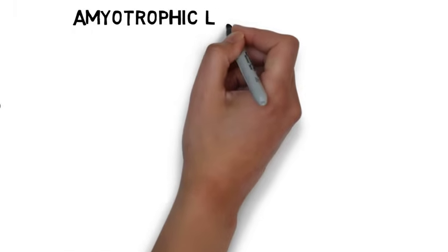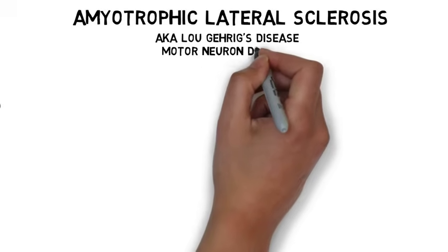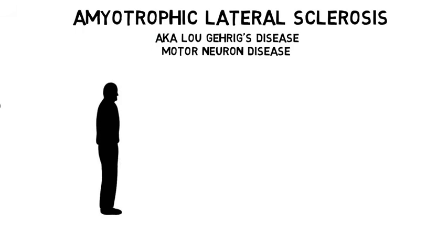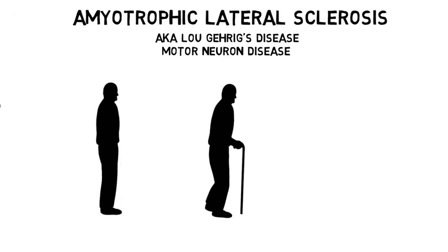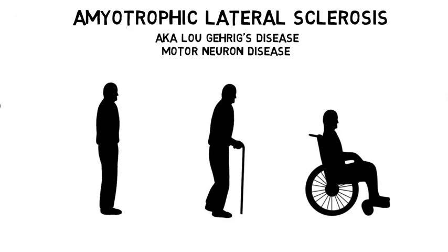Also known as Lou Gehrig's disease in the U.S. and motor neuron disease in the U.K., ALS is characterized both by muscle spasticity and a progressive weakening of the muscles. As the disease progresses, patients may lose hand and arm function and experience difficulty walking, speaking, and even breathing. Respiratory failure is often the cause of death, and the average survival time from diagnosis is around 3-5 years.